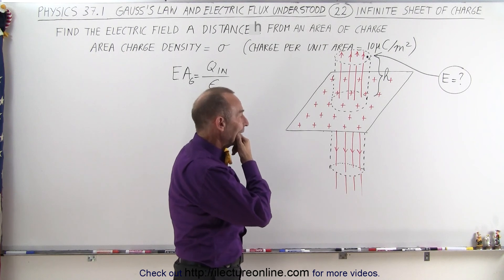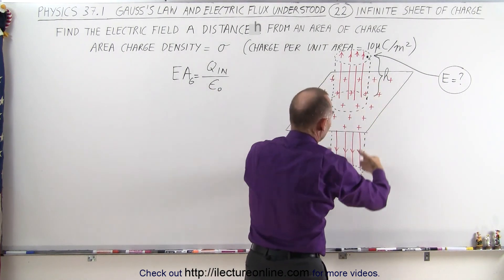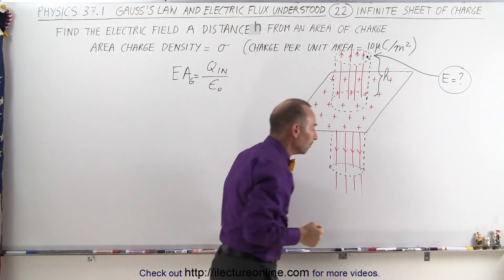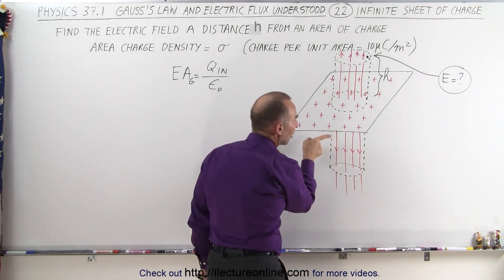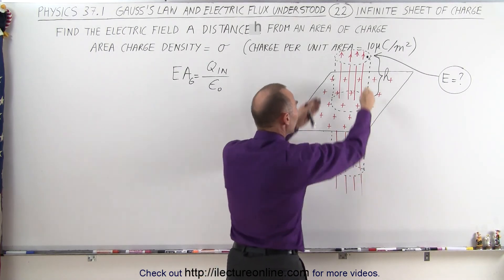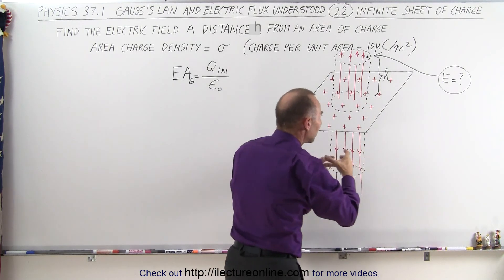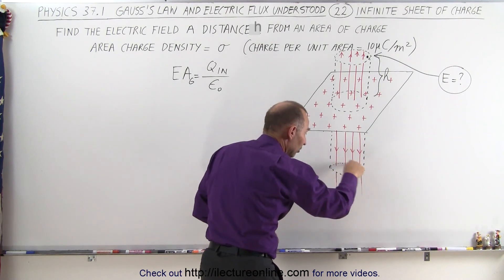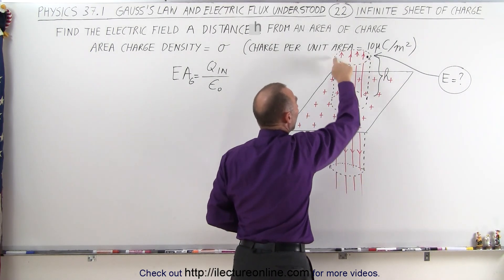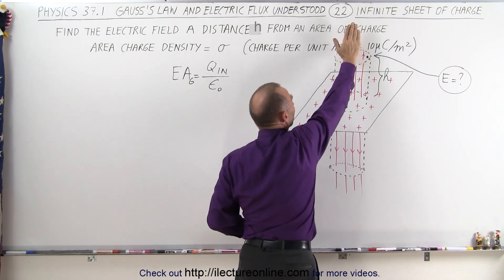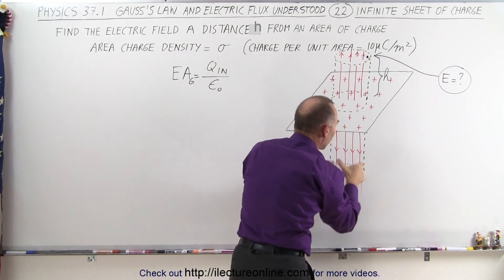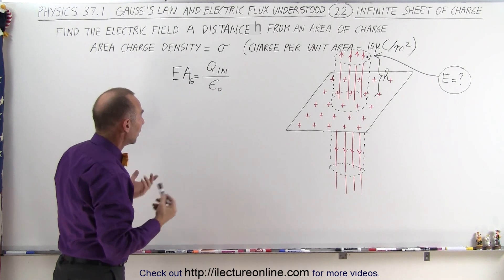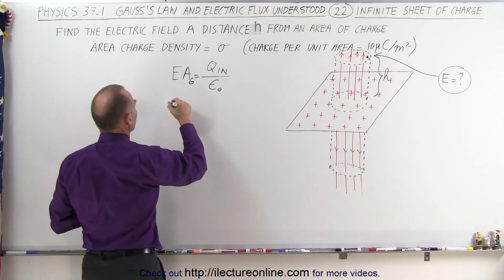The Gaussian surface is a cylindrical shape. It has a side area, a top circular area, and a bottom circular area. However, there is no electric field emanating out the sides of the cylinder, so we don't need to worry about the side area. We only need to worry about the bottom and top circular surfaces, because the electric field passes through both of those.